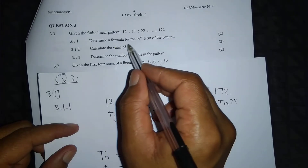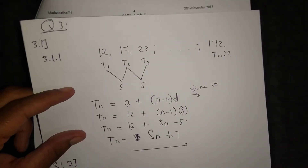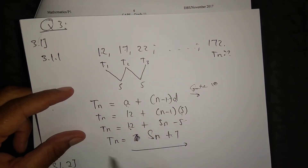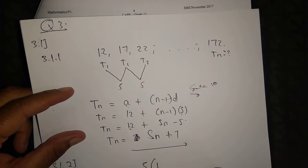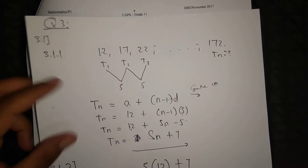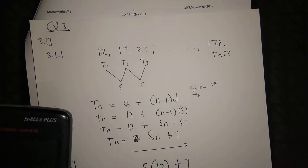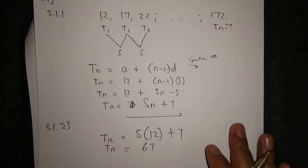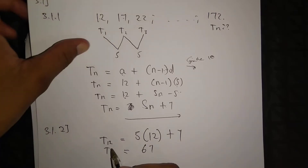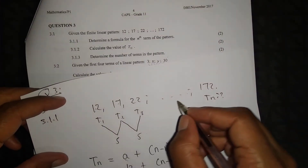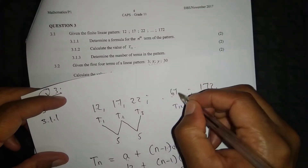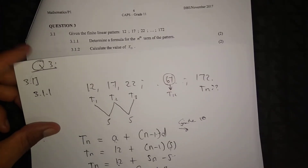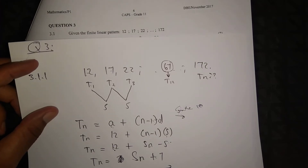So 3.1.2: calculate the value of t12. t12 is equal to — you substitute n = 12 into the nth term formula — which is 5 times 12 plus 7, equal to 60 plus 7, is 67. So t12 is equal to 67. It simply means the 12th term in this pattern, t1, t2, t3 ... t12, is 67.